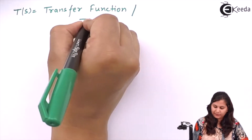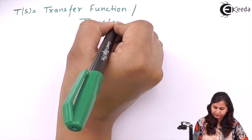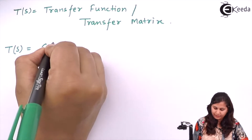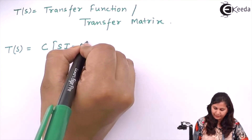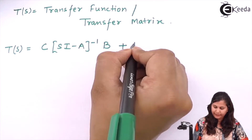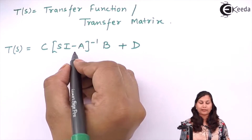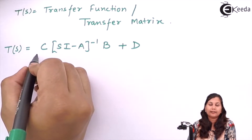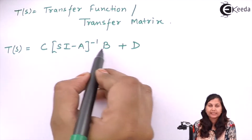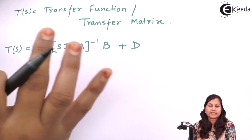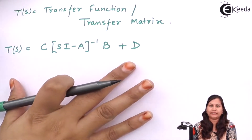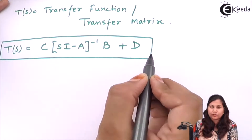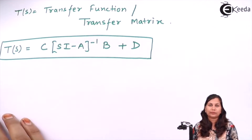We can call this the transfer matrix. T(s) equals C(sI minus A) inverse B plus D, where A is the system matrix, B is the input matrix, D is the transmission matrix, and C is the output matrix. If we are given the A, B, C, D matrices of the state space representation, we can easily calculate the transfer function of the system.